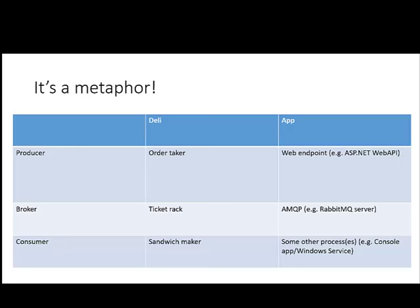Hypothetically, we could do all that work within the web request. But if we don't need instant responsive results, then we can just move that work off onto another process. And then I can get back to the business of just taking more requests. As the web endpoint, my one job is to just write the messages down and hand them off to Rabbit. That's all I'm doing — just as quickly as I can, taking in requests. And then those requests get processed by the console app or Windows service. If I get backed up, I can add more and more consumers — more sandwich makers.